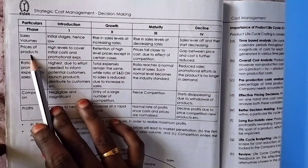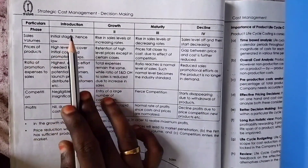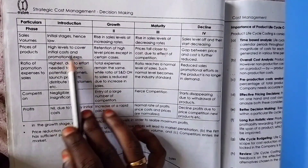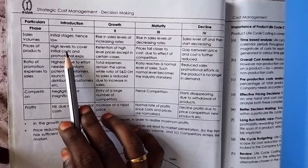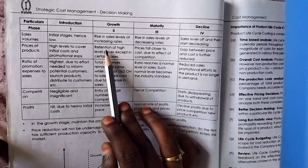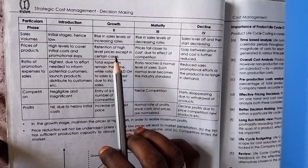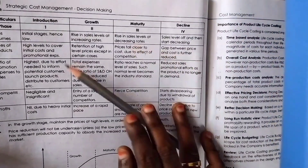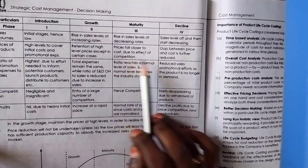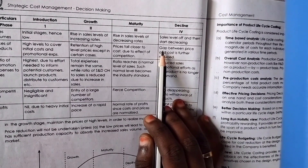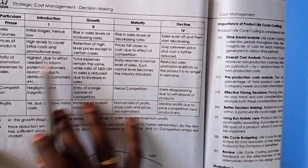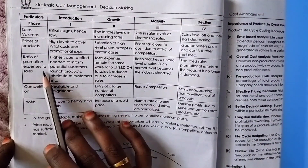Regarding price of products: in the Introduction phase, prices are set at high levels to cover high initial costs and promotional expenses. In the Growth phase, retention of high-level prices continues except in certain cases. In Maturity, prices fall closer to cost due to the effect of competition. In Decline, the gap between price and cost is further reduced.